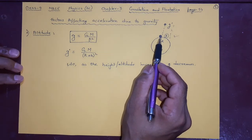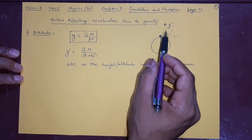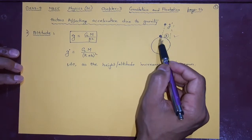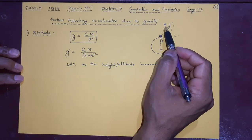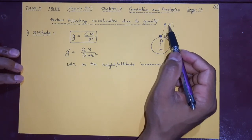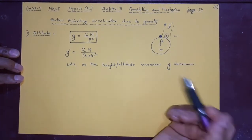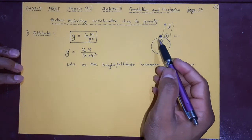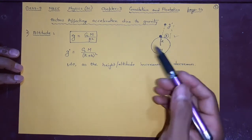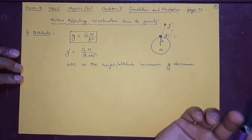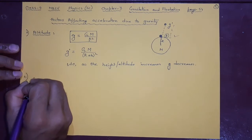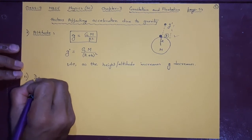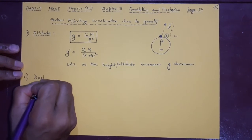Remember, acceleration due to gravity at the surface of the earth is 9.8 m/s². But if you go away from the earth, above the surface at some height and try to measure it, g will keep going on decreasing. That is the first factor.